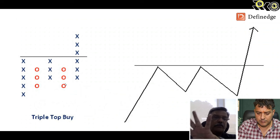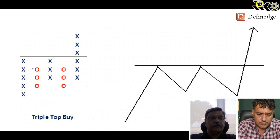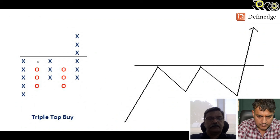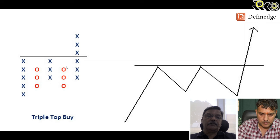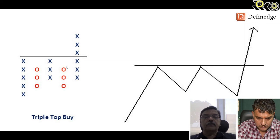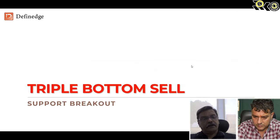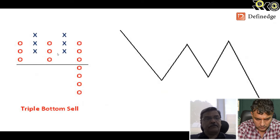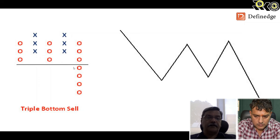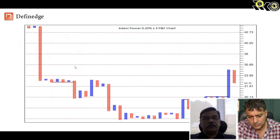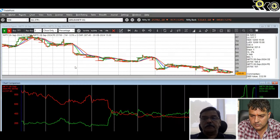The next pattern is the triple top buy — a five-column pattern. Column of X, small pullback, another column of X that doesn't exceed the first, another column of O, and in the fifth column it goes above the previous two X highs. The triple top buy is much more powerful than a double top buy in terms of breakout strength. On a line chart it looks like two resistance levels followed by a breakout. The exact opposite is a triple bottom sell — five columns where the fifth O column goes below the previous two O lows. We have developed 120 such patterns in-house at Define Edge.